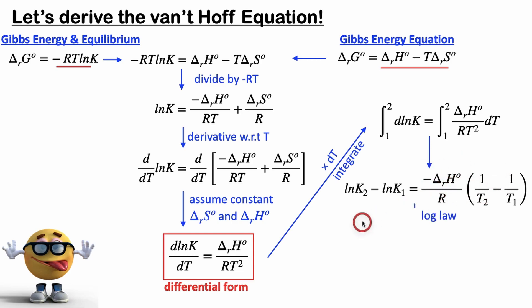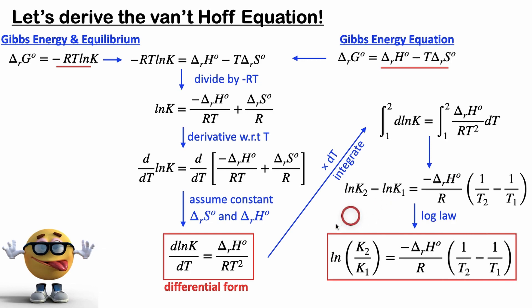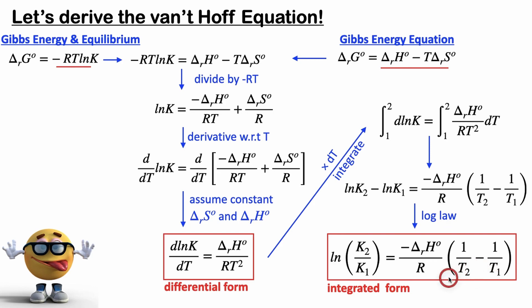Now we're going to use a log law to merge these two terms together, and this gives us the Van't Hoff equation in its integrated form. I wanted to pause to talk about what this means — we're not changing the temperature continuously. Even though there are two different temperatures, imagine you're doing the reaction twice: at one temperature you get an equilibrium constant, then you do the reaction again at another temperature, which gives you another equilibrium constant.